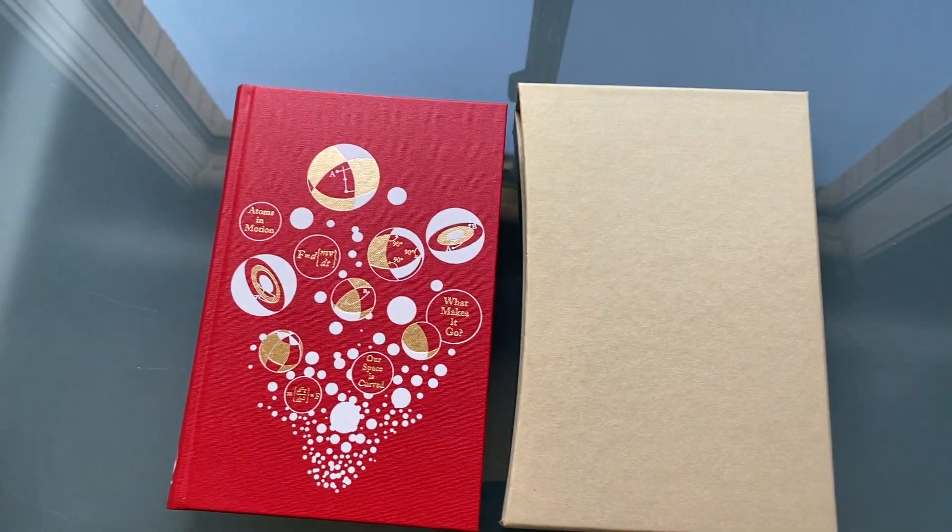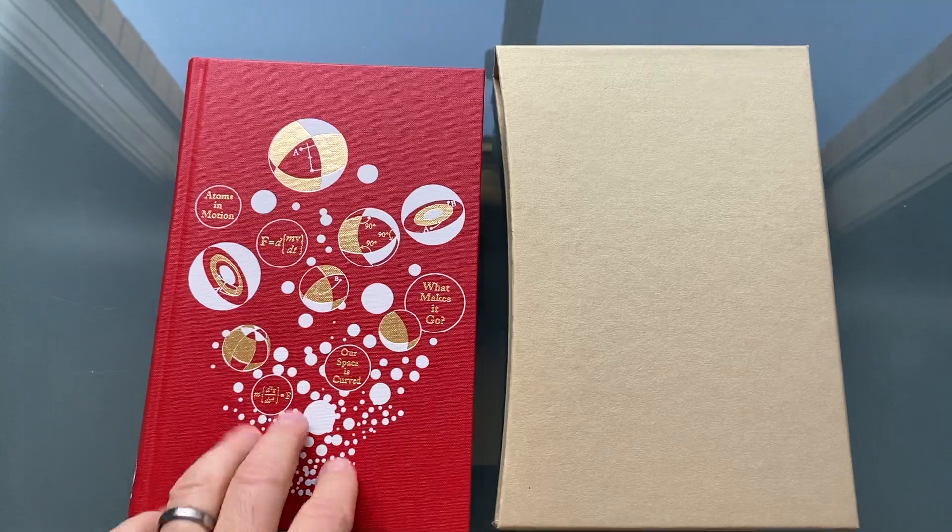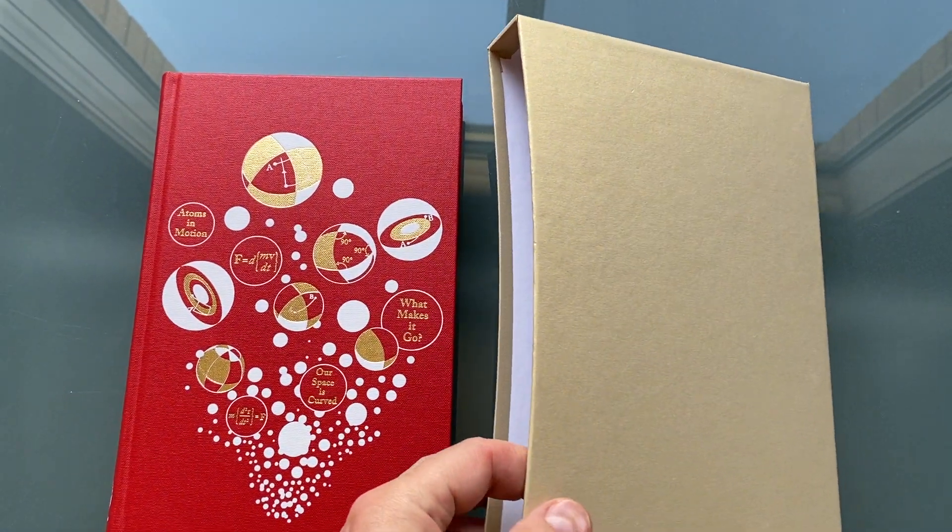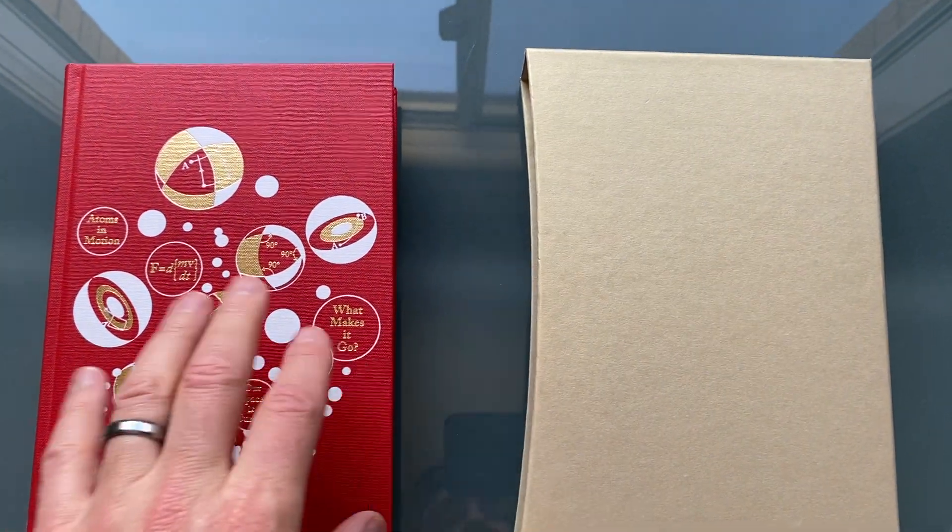Easy and Not-So-Easy Pieces by Richard Feynman. This is a Folio Society edition. It comes with a simple gold slip cover to protect it.